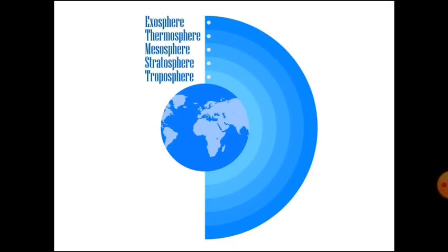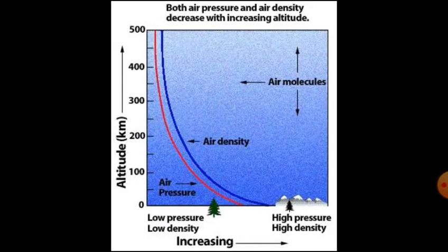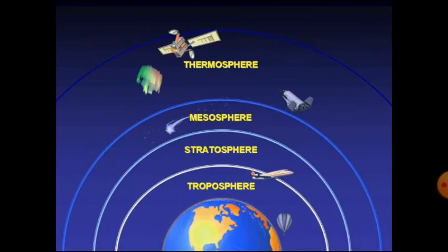So, this was about the layers of atmosphere. Note that air density and air pressure varies with height. It is maximum at the sea level and decreases rapidly as we go up. So, this was about the atmosphere and its layers.